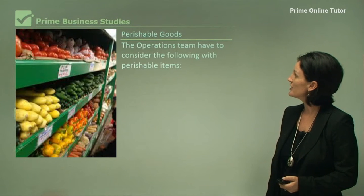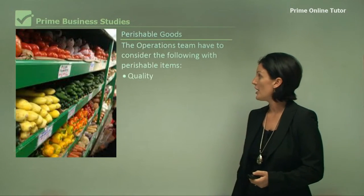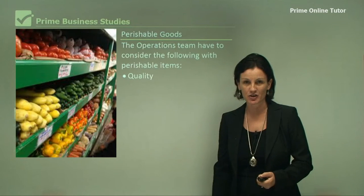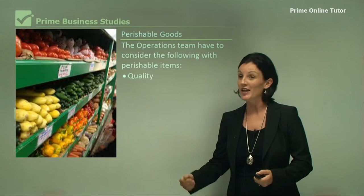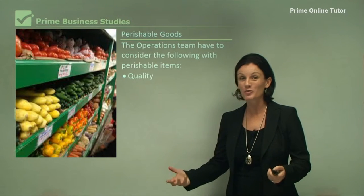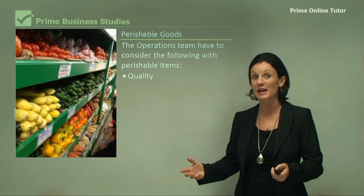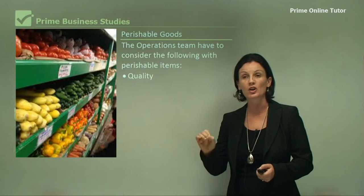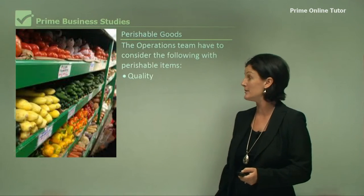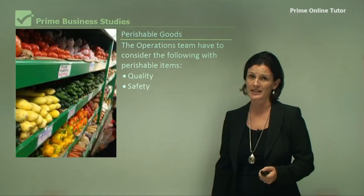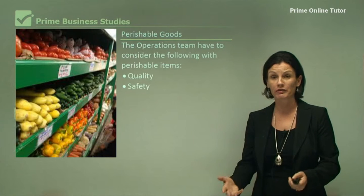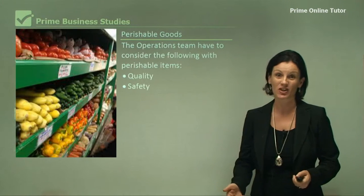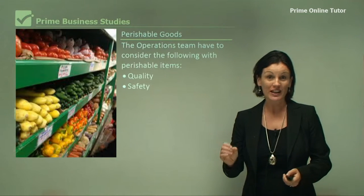The operations team must consider the following with perishable items. Firstly, quality — perishable items can be damaged on delivery to the store, in the storeroom, and even on the shelf as consumers handle them. The operations manager must check perishable goods constantly. Safety is also an important factor: if a perishable good falls on the shop floor and a person slips, that could result in legal action against the supermarket.